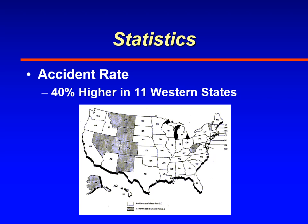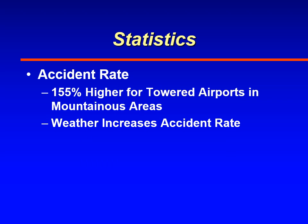This is one of the pages in there. They did a study back in the 1980s and 1990s looking at accidents in mountainous areas versus non-mountainous areas. They found that in the western United States — 11 western states classified as mountainous — there was a 40% higher accident rate. They also found that airports with control towers had a 155% higher accident rate in mountainous areas, and that inclement weather such as ceiling and visibility increased the accident rate further.